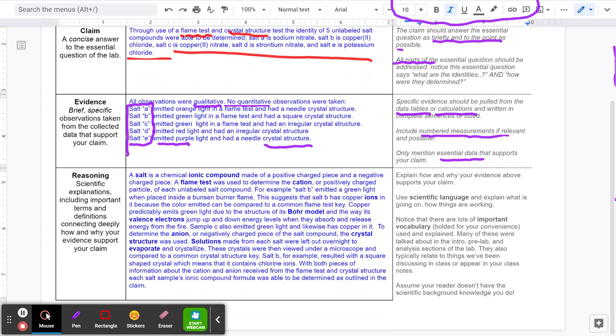Going down to the reasoning section, this section is the long section. This is the section that's going to take the most time, thought, and really brings things together. The reasoning section is the scientific explanations that include important terms and definitions that connect deeply to how and why your evidence support your claim.